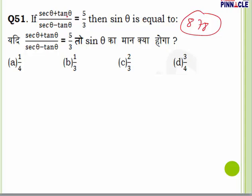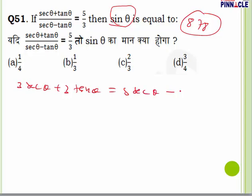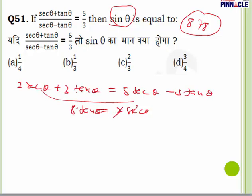Question number 51: it is given that secant theta plus tangent theta equals a given value, and we have to find the value of sine theta. In such type of questions, you can cross multiply: three secant theta plus three tangent theta equals five secant theta minus five tangent theta. Two secant theta goes to one side and eight tangent theta to the other, giving secant theta divided by tangent theta equals four.